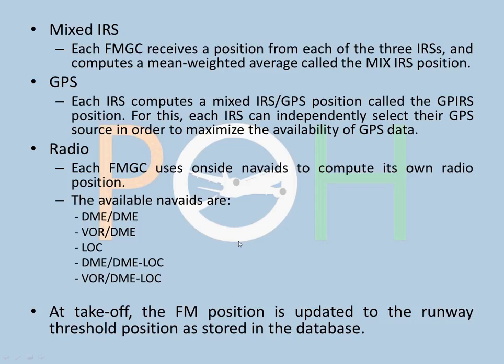Mixed IRS: IRS is the inertial reference system, computing position based on using gyros. There are three IRS units in the A320, and mixed IRS calculates a mean weighted average of all three, giving a very accurate position called the mixed IRS position. Next, GPS — this is not raw GPS. Each IRS computes a mixed IRS and GPS position called the GP IRS position, which is also very accurate. Each IRS can independently select its GPS source to maximize GPS data availability, and can reject inaccurate GPS data.